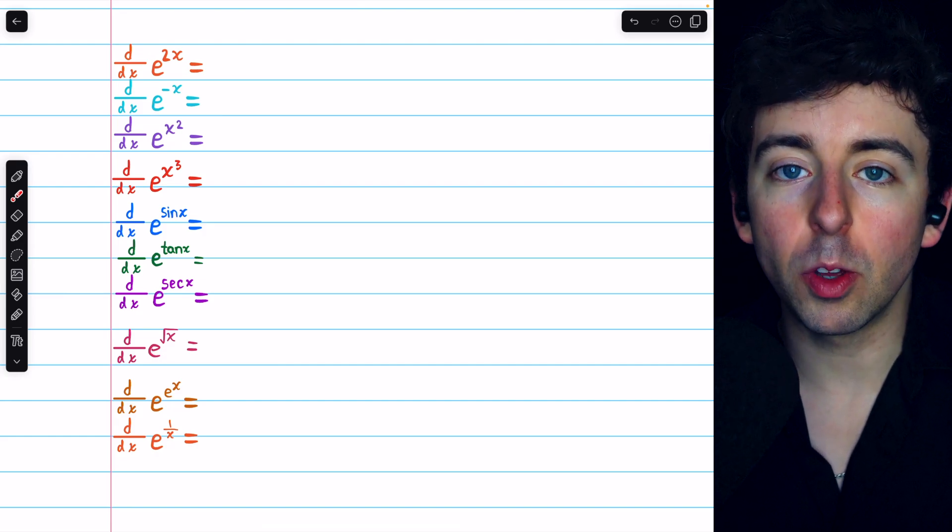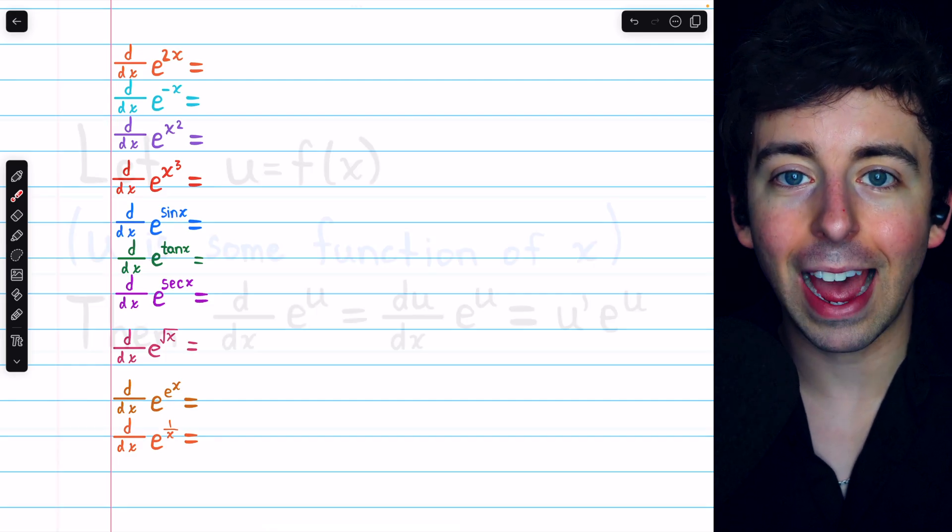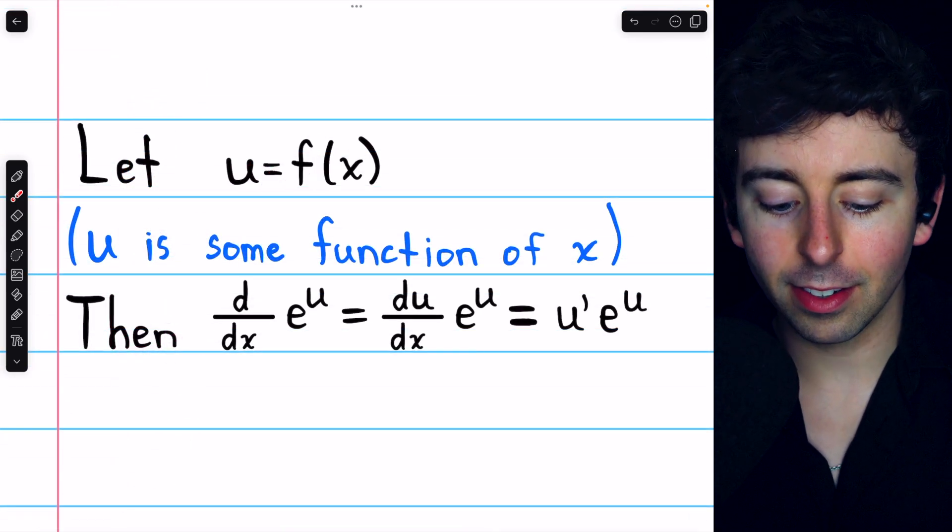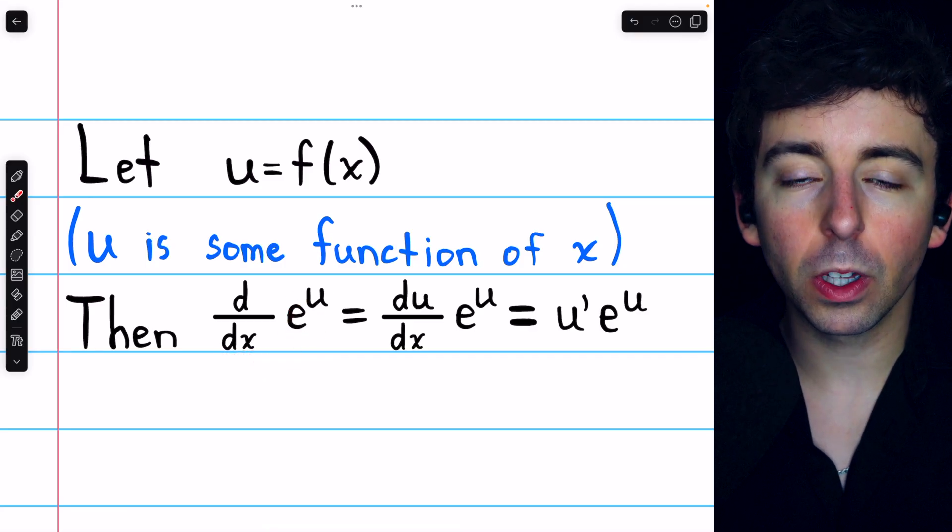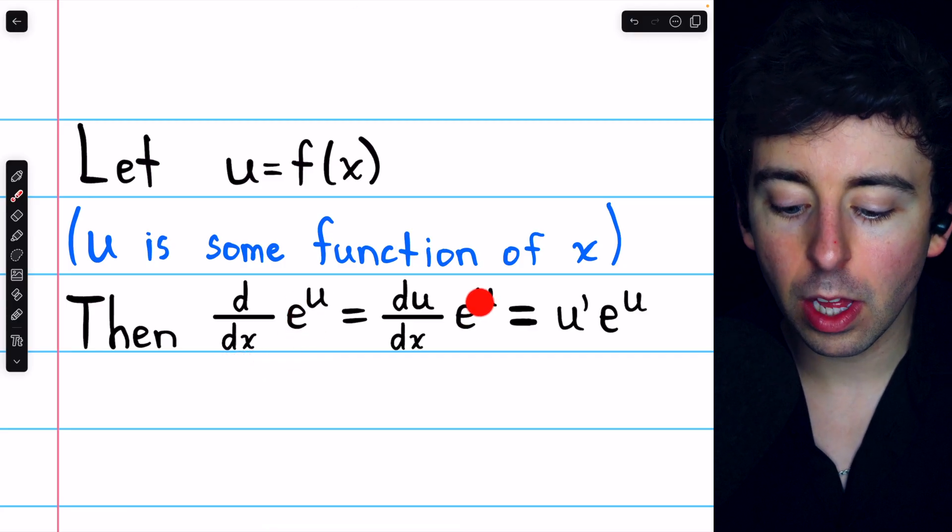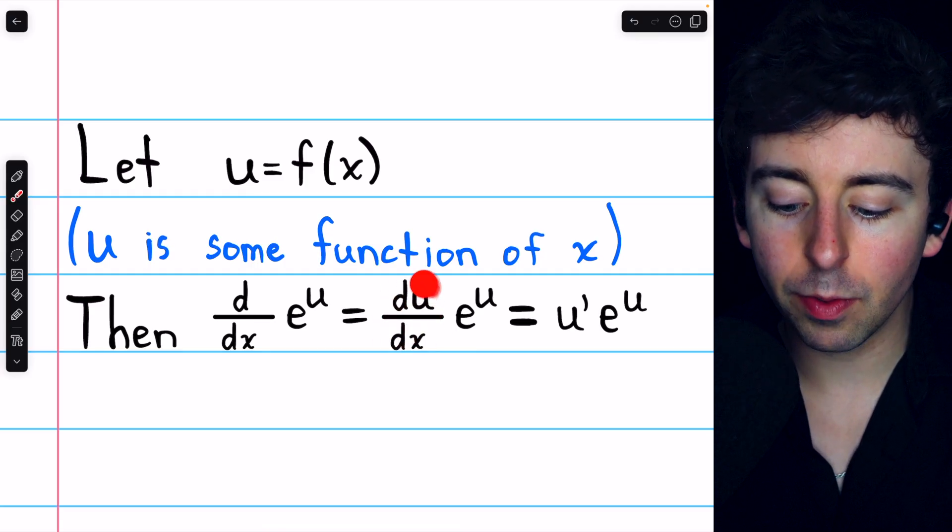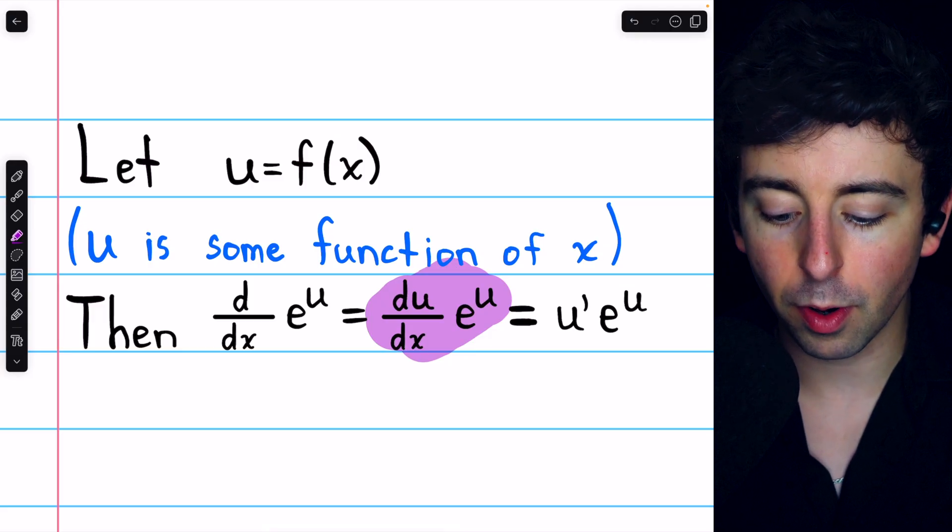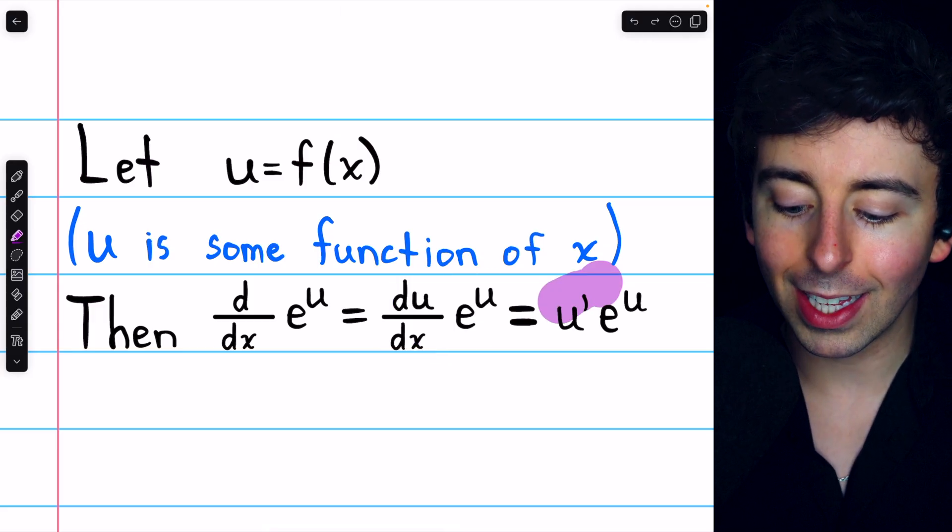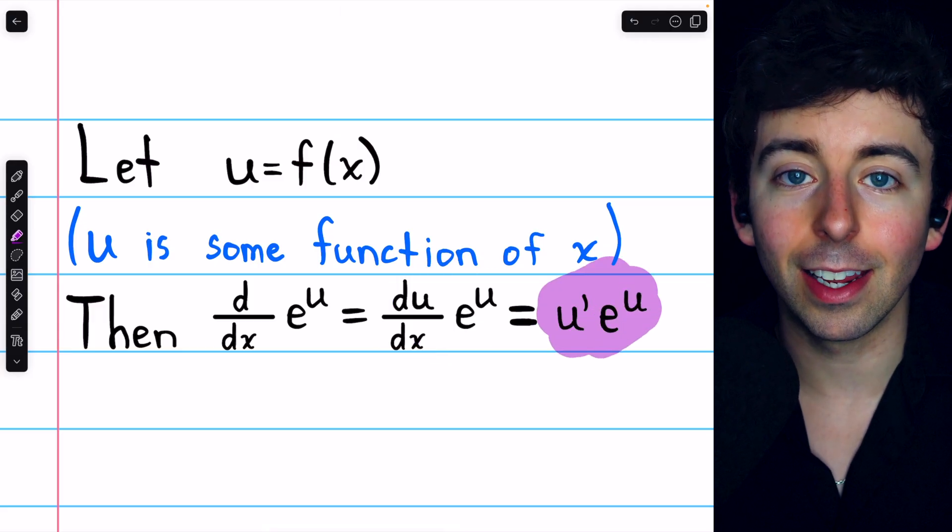You can take its derivative using the chain rule, and here's how. If u is some function of x, then the derivative of e to the u by the chain rule is just e to the u multiplied by the derivative of that function in the exponent, which we could write like that, or if you prefer prime notation, we could write it like this: u prime e to the u.